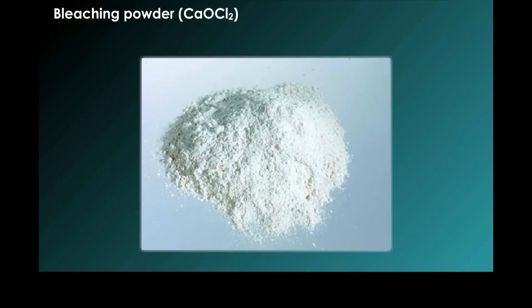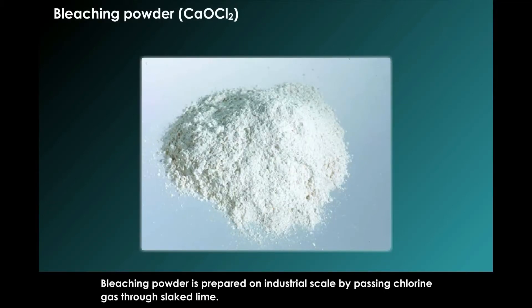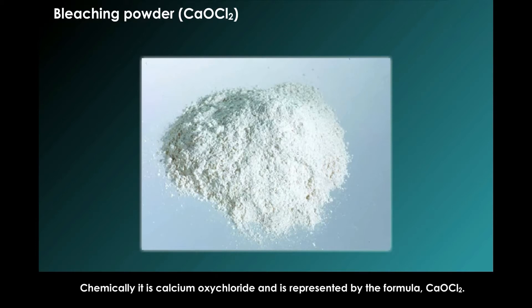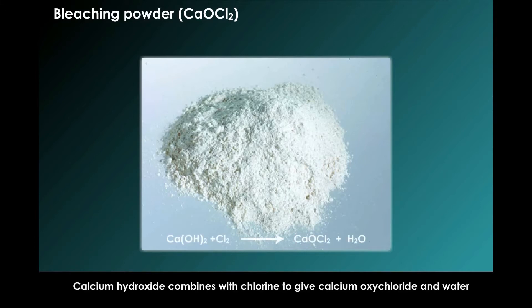Bleaching powder is prepared on industrial scale by passing chlorine gas through slaked lime. Chemically, it is calcium oxychloride and is represented by the formula CaOCl₂. Calcium hydroxide combines with chlorine to give calcium oxychloride and water.